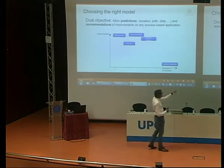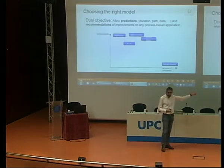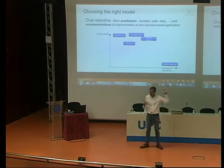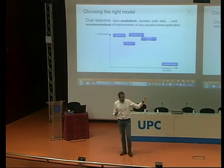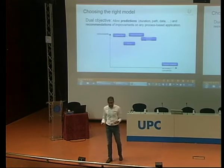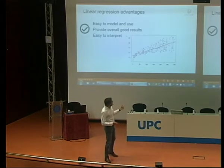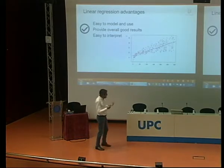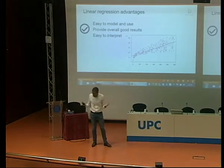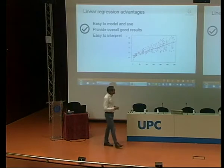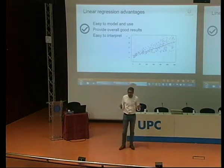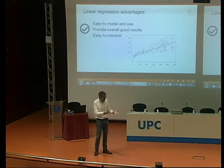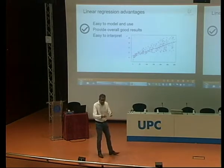I wanted to classify them on accuracy and also interpretability. Why is interpretability important? Because if you are not able to interpret your algorithm, you are probably not able to make a recommendation. Simple algorithms like linear regression are really easy to model, work pretty well depending on your use case, and are really easy to interpret. So you can make recommendations based on linear regression because it's easy to understand why it's making that prediction.